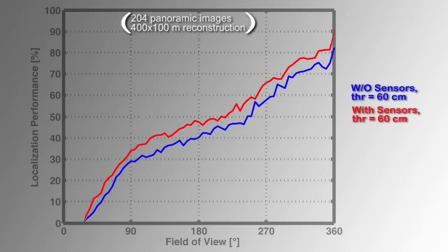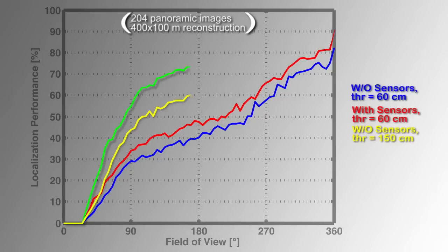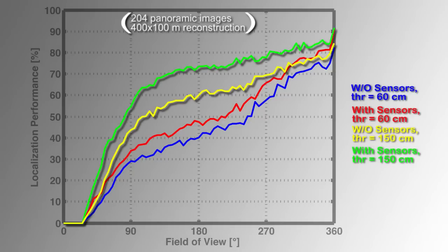A direct comparison reveals a considerable improvement in localization performance. Since a small field of view violates the wide baseline requirement of the three-point pose algorithm, a bigger improvement is gained for a looser distance threshold. It is important to stress the proportionality between the field of view and the time to localize. Pushing the performance curve towards the upper left corner means that the required time to localize is decreased significantly.